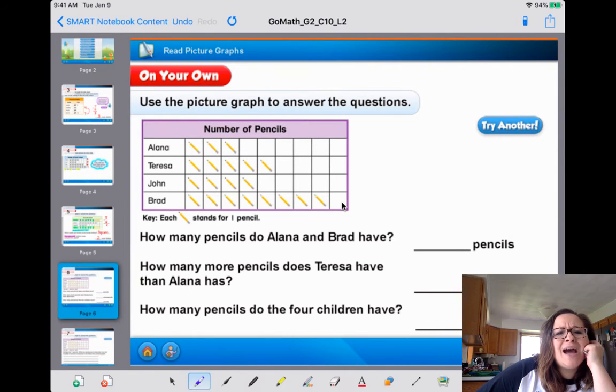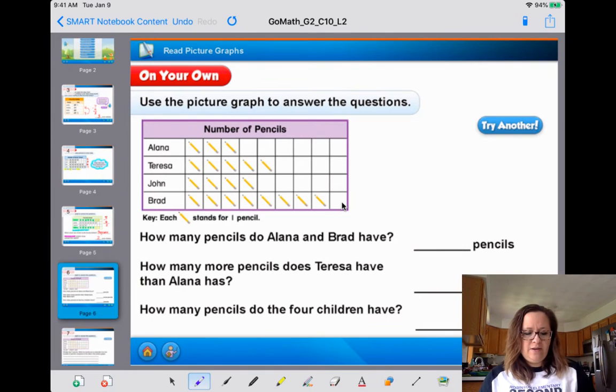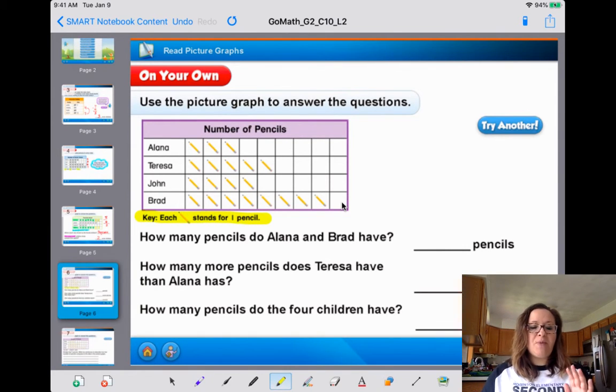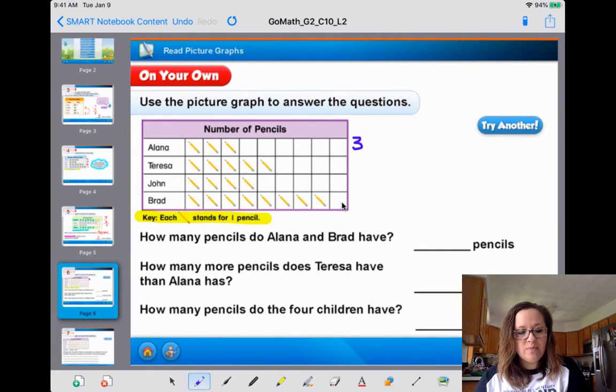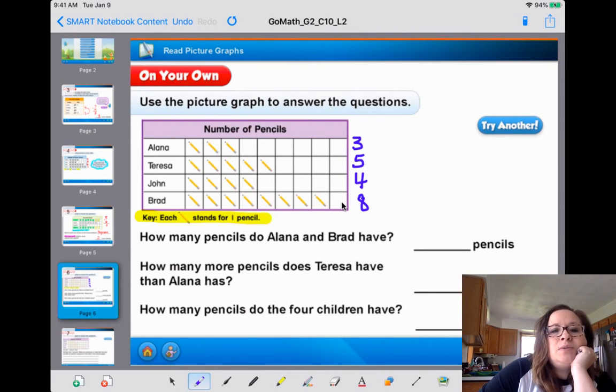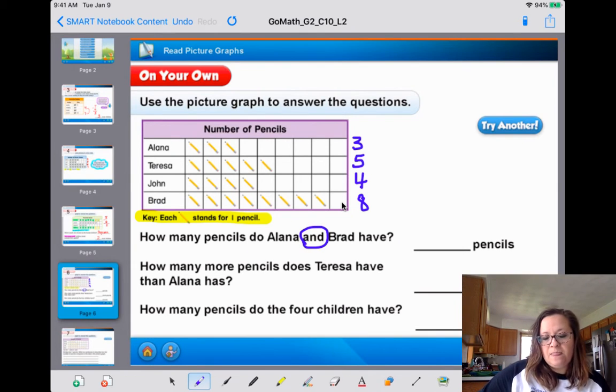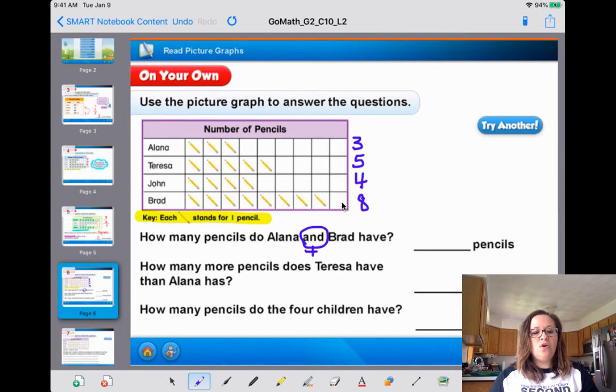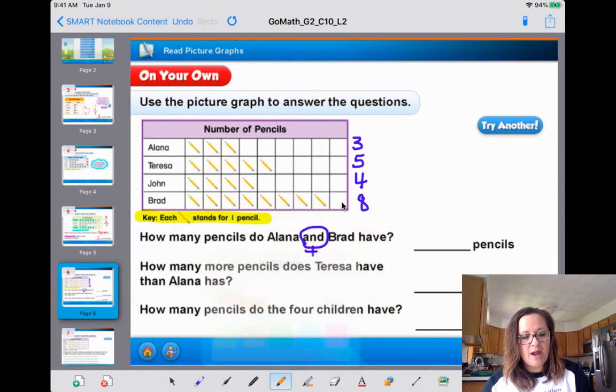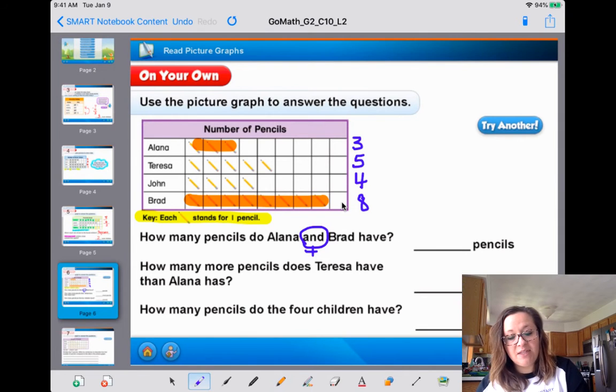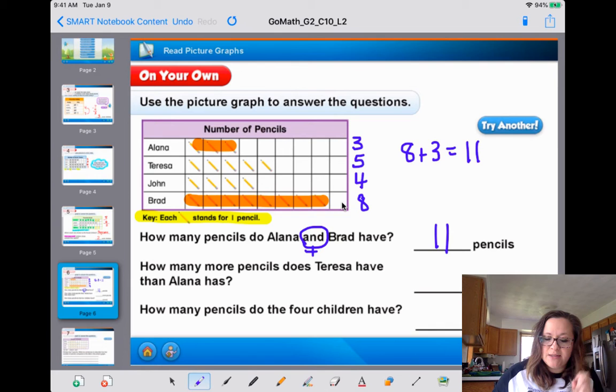So we got four students on the side and the number of pencils they have. And if you notice again, oh my gosh, I really wish they would try to trick you at least. Look at the key again. One. Each pencil is one. So if you like to do what Miss Wolf does, I like to write the numbers on the side sometimes. And then I don't get tricked up. How many pencils do Elena and Brad have? Look at that word and. Do you see it right there? And is together, adding, right? So Elena and Brad. Elena has three. Brad has eight. So let's add them together. Eight plus three equals 11. So both of them together have 11 pencils, right? See how I did that?